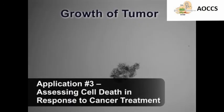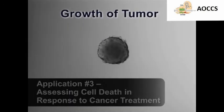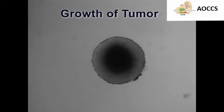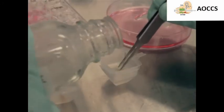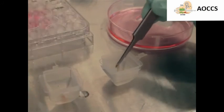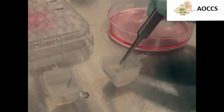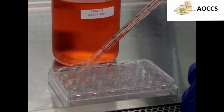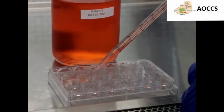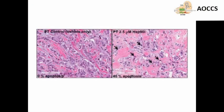Lastly, TUNEL staining can be used on human tumor samples in order to determine tumor responsiveness to drugs. In this example, tumor samples were harvested from human patients and cultured ex vivo. Next, they were treated with preclinical drugs and assessed for a response using the TUNEL assay. Data obtained show that treatment with a drug that inhibits heat shock protein 90 significantly increases apoptosis in tumor tissue.